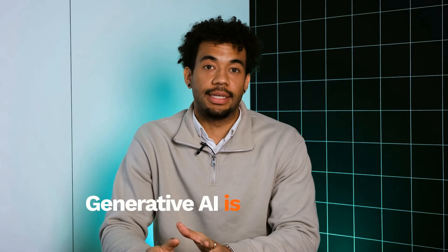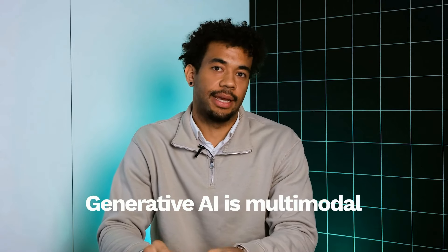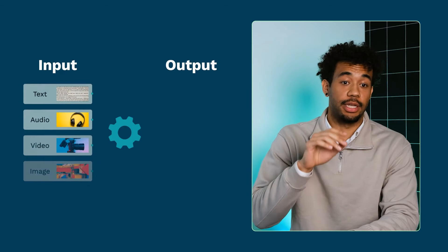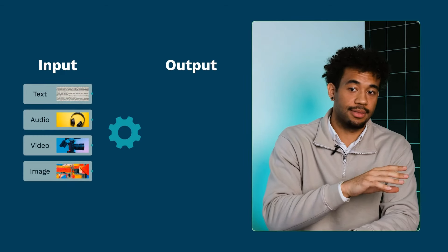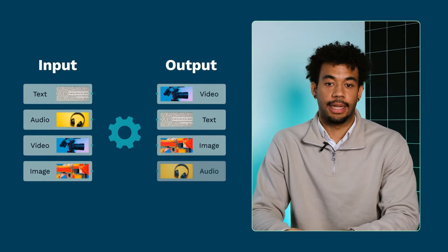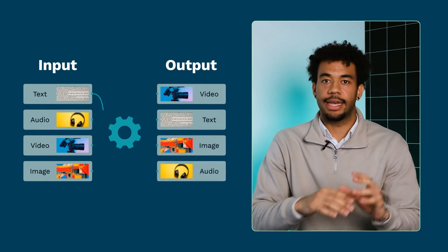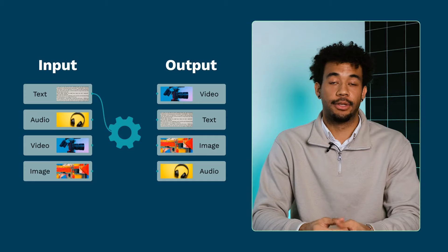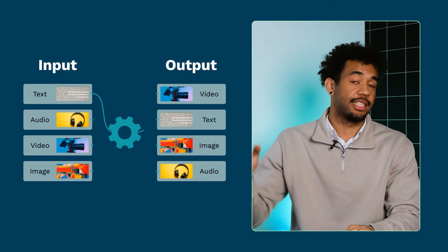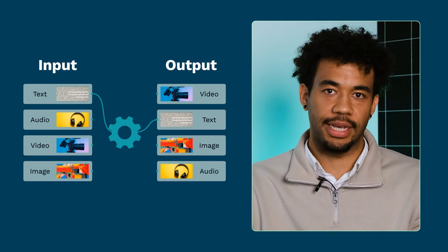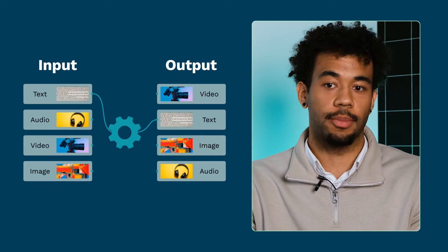One thing to note is that generative AI is multimodal. That means it can represent mappings from many different input formats to different output formats. For example, we can input a text-based prompt — a sentence or a question — to get a text-based answer as an output. That's a very simple case you may have already come across.